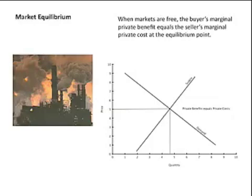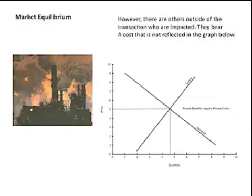Now let's consider that there are neighbors around the factory who are impacted by it. They take in the dirty air, which may harm their health or reduce their quality of life. Perhaps there's water pollution. In any case, there are people around the factory who are being impacted, and yet the costs they bear — such as higher health care costs — are not included in the demand and supply curve we see in the graph. So we call this a negative externality: there are outside social costs that are not being recognized in a classic private market.